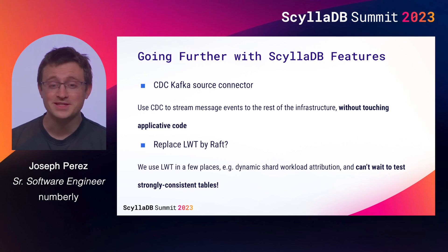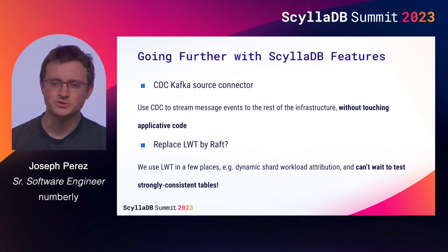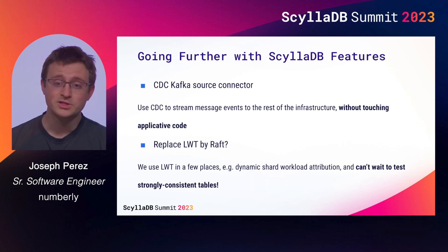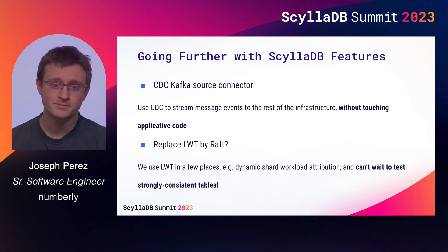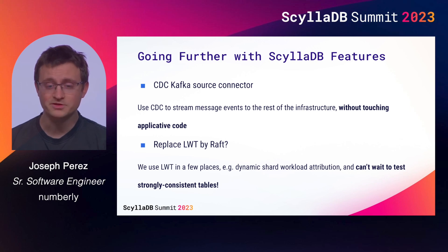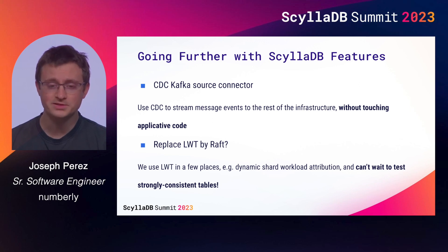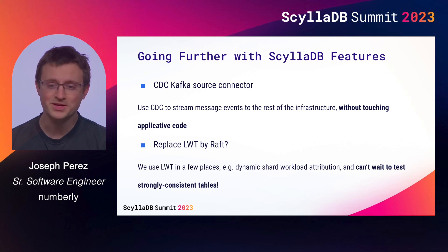We bet on ScyllaDB, and that's a good thing, because it has many other features we want to benefit from. For example, change data capture: using the CDC Kafka source connector, we can stream our message events to the rest of the infrastructure without touching applicative code — observability made easy. ScyllaDB has also advertised strongly consistent tables with Raft as an alternative to LWT. Currently we use LWT in a few places, especially for dynamic shard workload attribution, so we can't wait to test this feature.